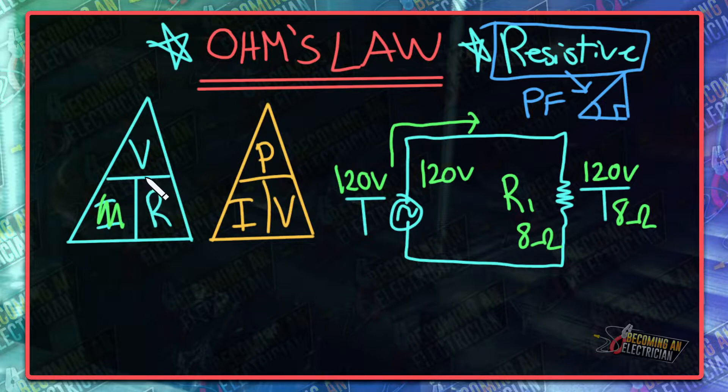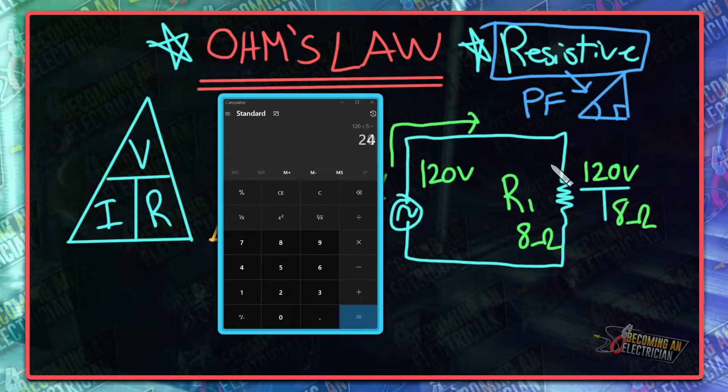Let me load up the calculator here. 120 volts divided by 8 ohms gives us 15 amps.